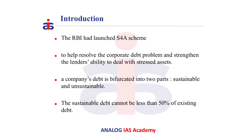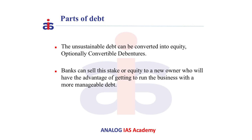Under this scheme, a company's debt is bifurcated into two parts: sustainable and unsustainable, based on the cash flows of the company's project. The sustainable debt cannot be less than 50 percent of existing debt and it will have to be serviced over the same terms as that of existing facilities.